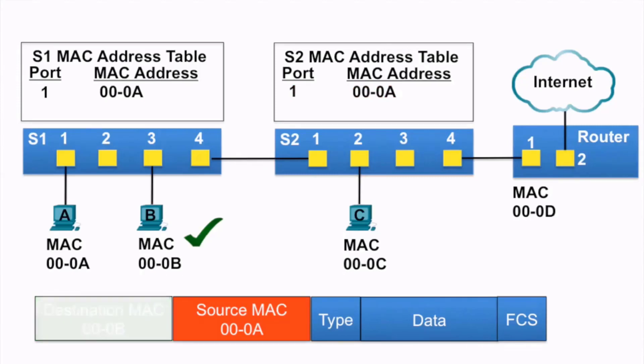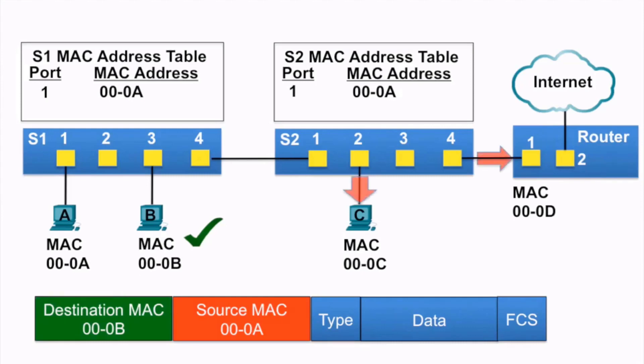Next, switch S2 examines the destination MAC address, notices that it is not in its MAC address table, so it floods it out all ports.